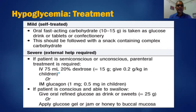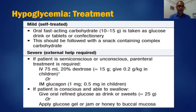In severe hypoglycemia, external help is required. If the patient is semi-conscious or unconscious, parenteral treatment is required: intravenous 20% dextrose 75 ml, or intramuscular glucagon. Intramuscular glucagon is used mainly in type 1 diabetes but is not widely available in our country. If the patient is conscious and able to swallow, oral drinks, sweets, glucose gel, jam, or honey may be applied to the buccal mucosa.